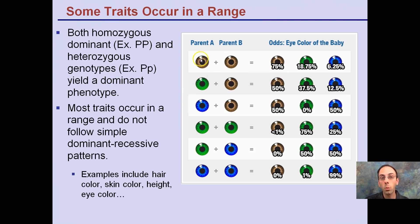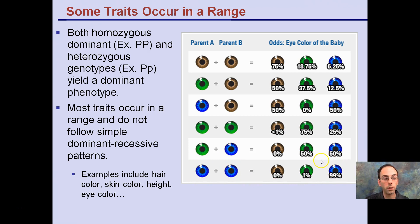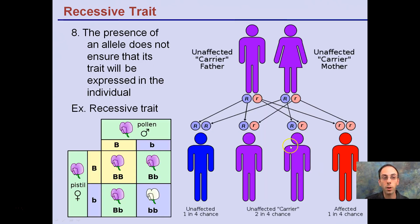Some traits occur in a range. Eye color in particular is one that varies a lot. Two people with brown eyes can have a child with blue eyes because there are many different genotypes that can represent that same brown-eyed phenotype. If you have two people with blue eyes, because that's a recessive trait, the odds strongly favor the offspring also having blue eyes. With two carriers, 25% of offspring may be homozygous dominant, 25% homozygous recessive, and 50% will be carriers of that trait — not expressing it but carrying the recessive allele.